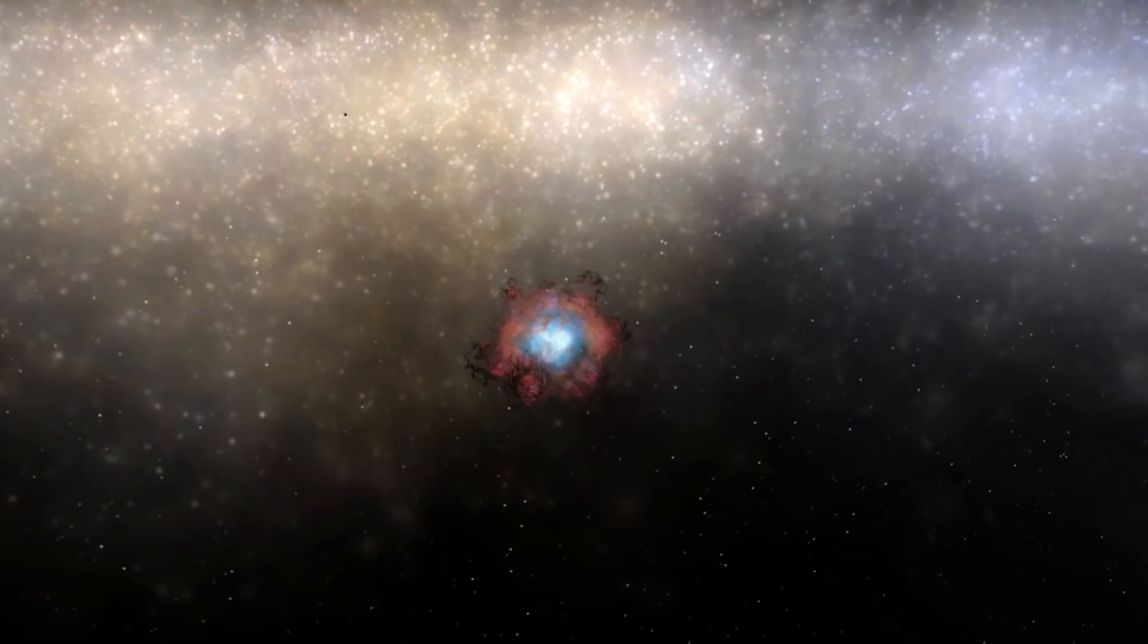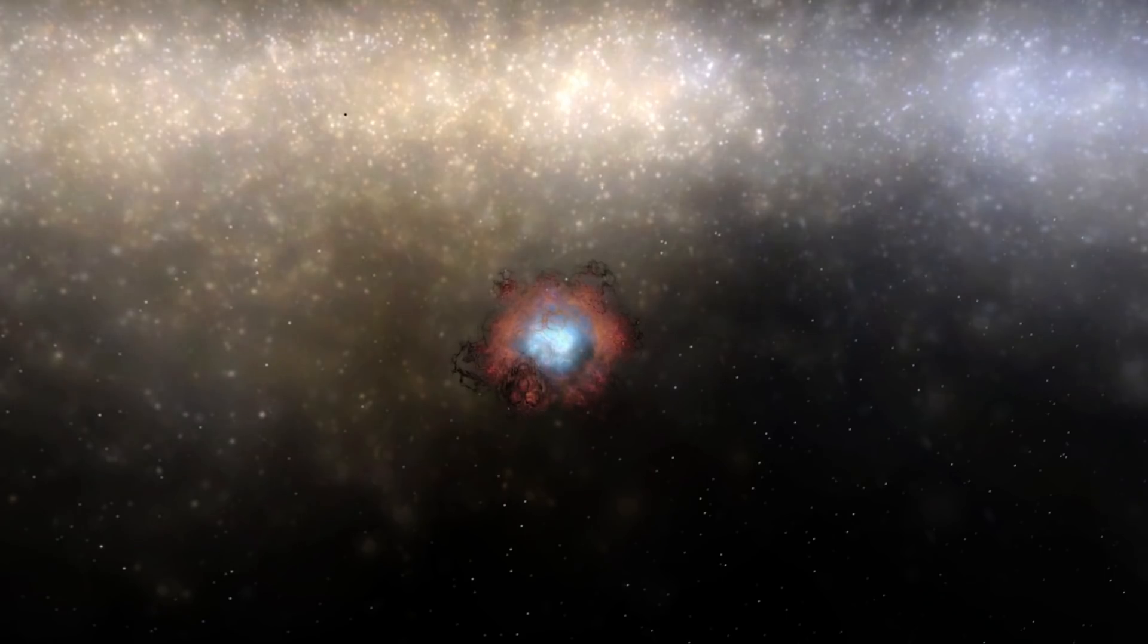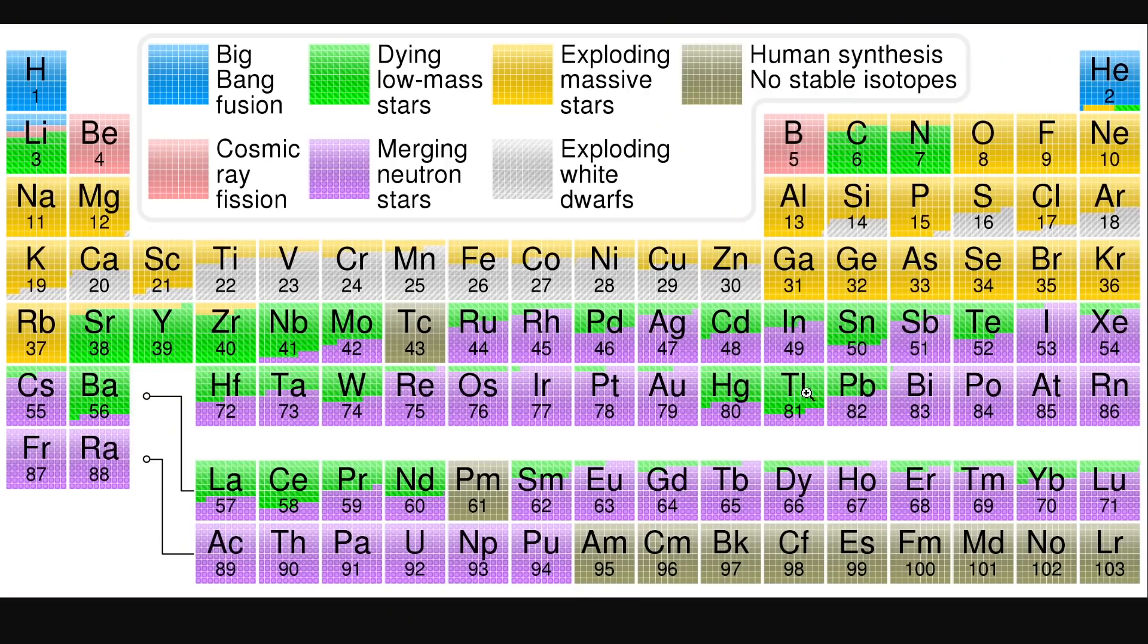Different types of Type 1 and Type 2 supernovae can actually produce a lot of these heavier elements, but because they're not necessarily the most powerful explosions in the universe, they don't really produce everything. Some of these heavier elements, specifically elements like plutonium, will generally require something even more powerful to provide them with just enough neutrons and mass to create these relatively unstable isotopes like plutonium-244. These heavier elements have always been believed to be produced in what's known as kilonova.